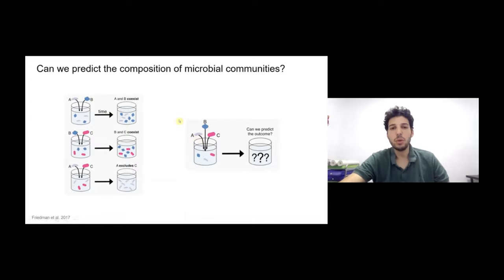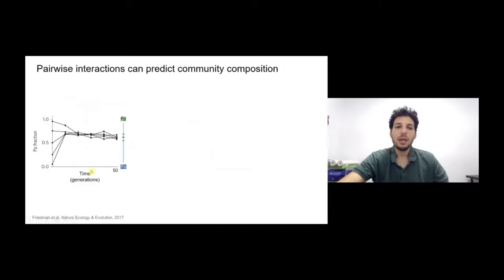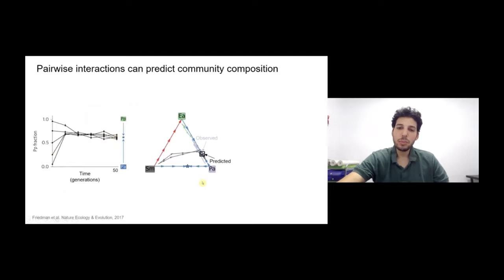The short answer is yes, it's possible. To do that, we co-cultured pairs of species, looked at what composition they end up with, and then used that information to make predictions about the composition of trios — three-species combinations.